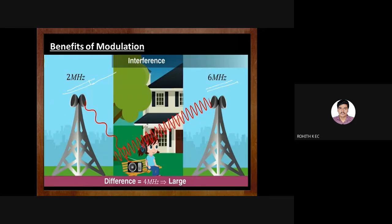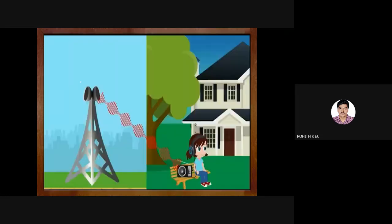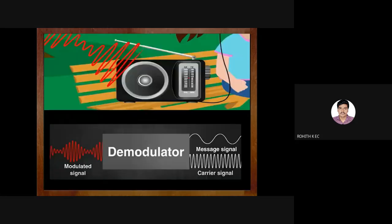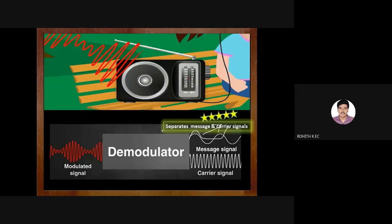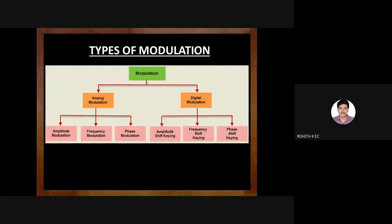Additionally, if one antenna transmits at 2 MHz and another at 6 MHz, there is sufficient difference between the frequencies so the receiver can easily differentiate the two signals and demodulate them. This avoids interference or crosstalk. At the receiver, demodulation splits the message signal from the carrier, and the message signal is given to the loudspeaker as actual audio or information.